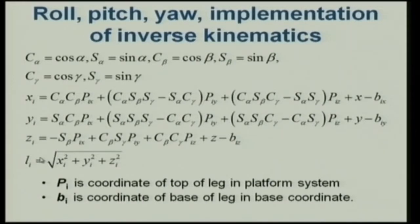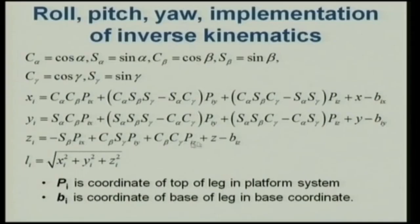Similarly, you get the y-extent and z-extent of each leg in the base coordinate system, and then simply take the square root to get the leg length. This is a very general formulation using the Euler format, and it is not a vague matrix anymore — you can write it out in long form and calculate the leg length in Excel or MATLAB quite effortlessly.